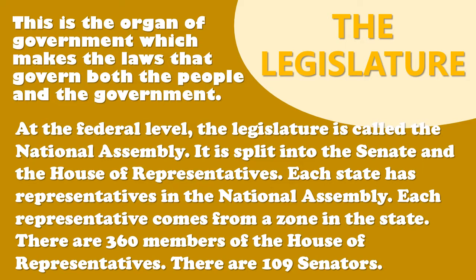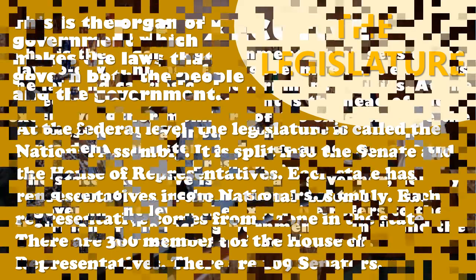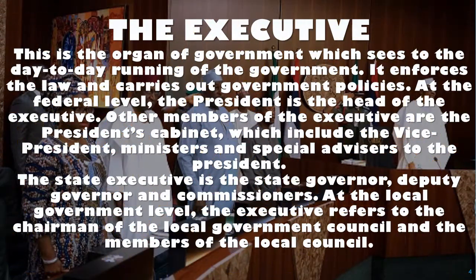At the state level, there is a State House of Assembly. Just as we have in Edo State, located at Ring Road, that's our House of Assembly. While at the local government level, the council members have the local house of assembly.